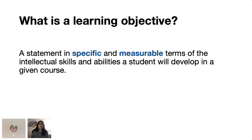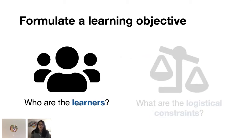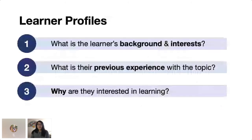So our steps for formulating a learning objective, we should consider these two different questions, especially in the non-traditional context. Who are our learners and what are our logistical constraints? So first, we want our objectives to be learner-centered. And so learning objectives communicate the goals and purpose of our teaching context to everyone, and we want to tailor our goals to the learners in our classroom, whatever form that classroom may take. So it's helpful to ask these questions about our learners. First, what are the learners' backgrounds and interests? What is their previous experience with the topic? And then also, why are they interested in learning?